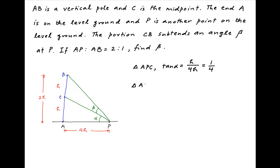Similarly, in right-angled triangle APB, tan of alpha plus beta is equal to the perpendicular AB which is equal to 2H, divided by the base AP which is equal to 4H. Therefore, tan of alpha plus beta is equal to half.